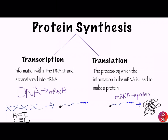Let's go back to the beginning for a general reminder. There are four bases: adenine, thymine, cytosine and guanine. Adenine pairs with thymine and cytosine pairs with guanine by hydrogen bonding. These base pairs connect together to form two complementary strands known as deoxyribonucleic acid, or DNA.